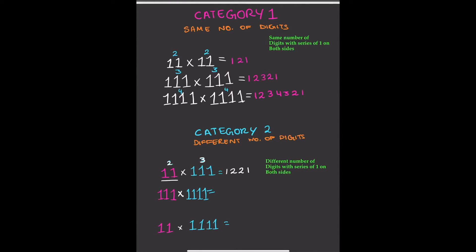Now we have 111 times 1111 — three digits on the first number and four on the second. The lower count is 3, so we increase from 1 to 3: that's 1, 2, 3. The difference between 4 and 3 is 1, so we repeat the last digit once more, writing another 3. Then we decrease back to 1: 2, 1. The answer is 1, 2, 3, 3, 2, 1.